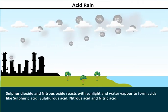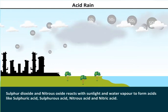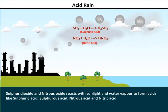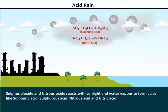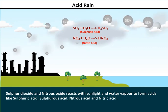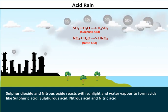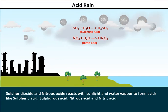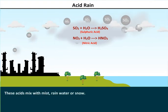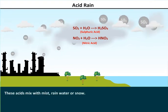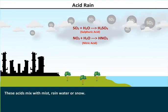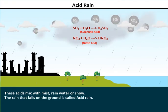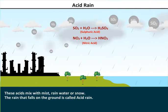Sulfur dioxide and nitrous oxide react with sunlight and water vapor to form acids like sulfuric acid, sulfurous acid, nitrous acid, and nitric acid. These acids mix with mist, rainwater, or snow. The rain that falls on the ground is called acid rain.